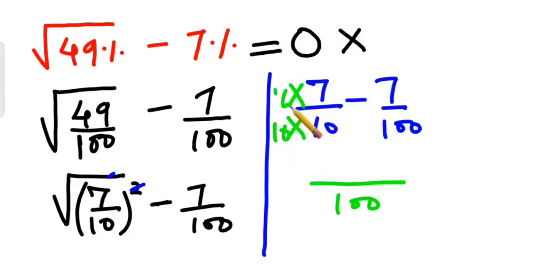Similarly, 7 also gets multiplied by 10. So, we will get 70. 7 into 10 is 70 minus 7. So, answer comes out to be 70 minus 7, that is 63 upon 100.